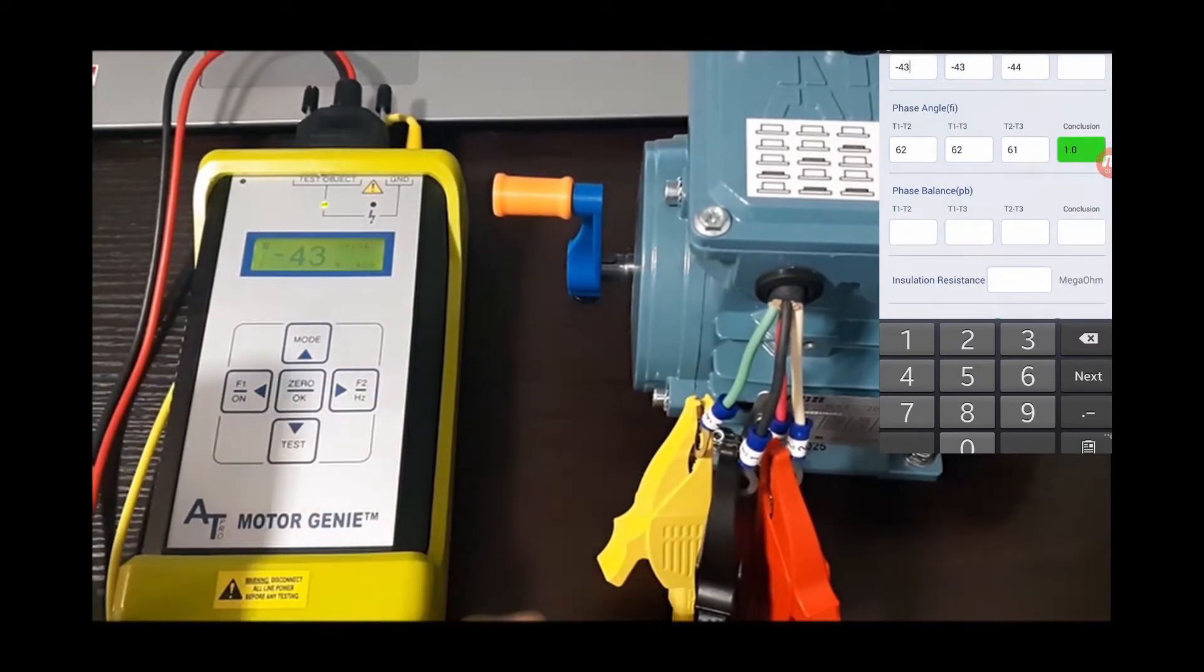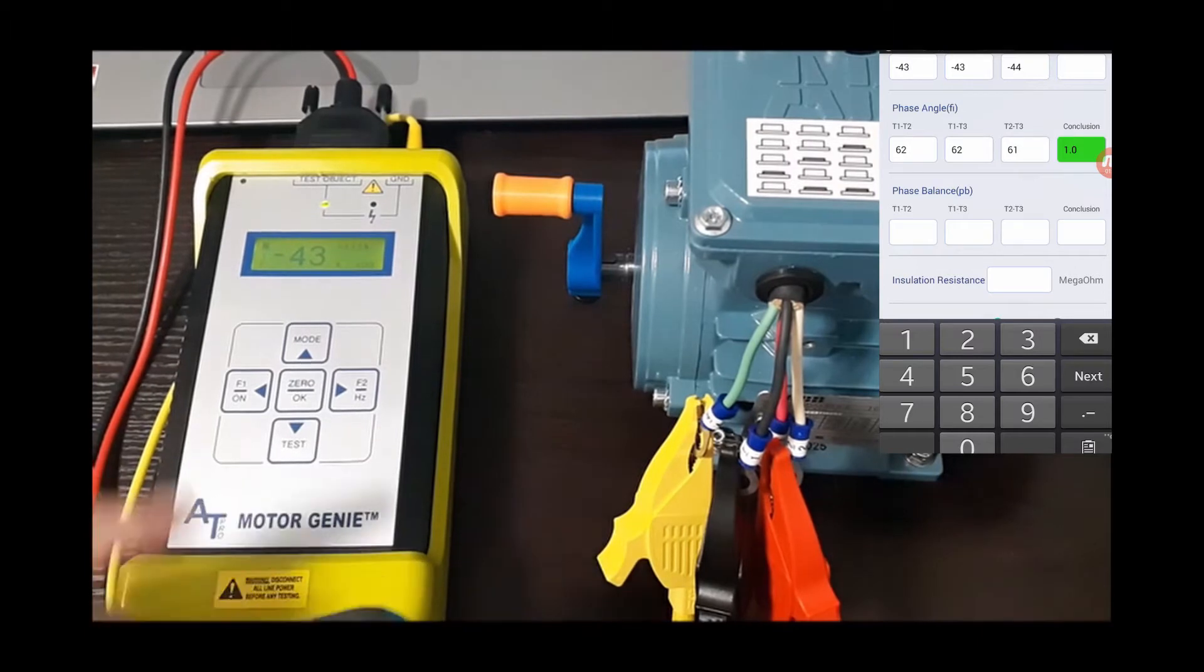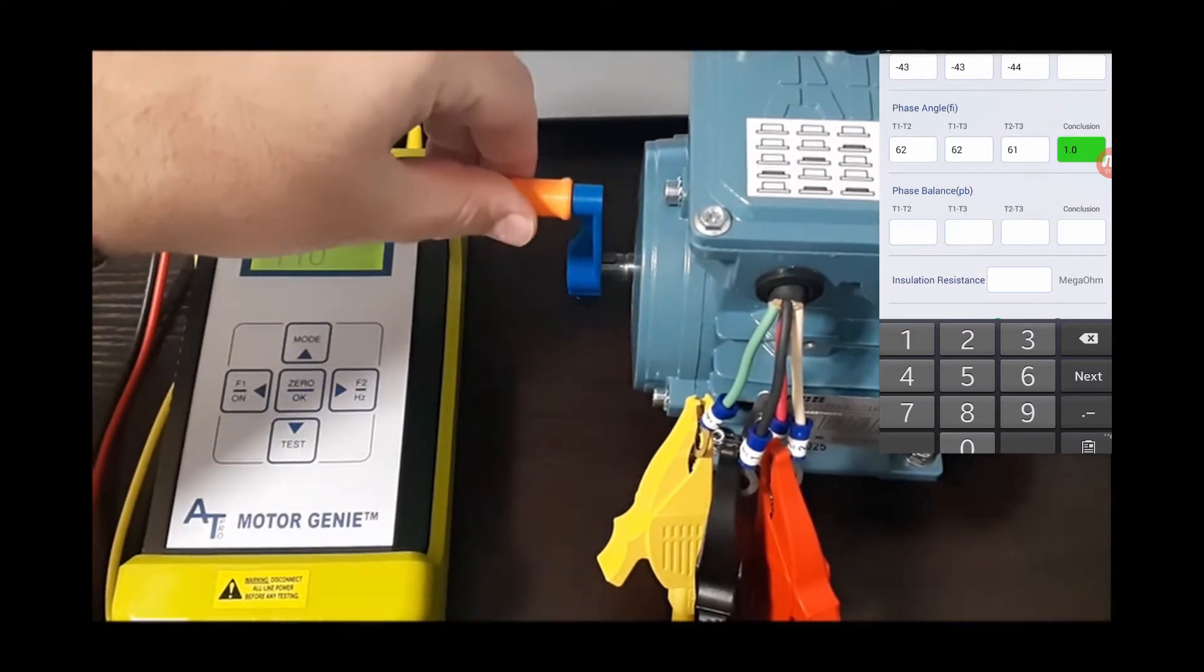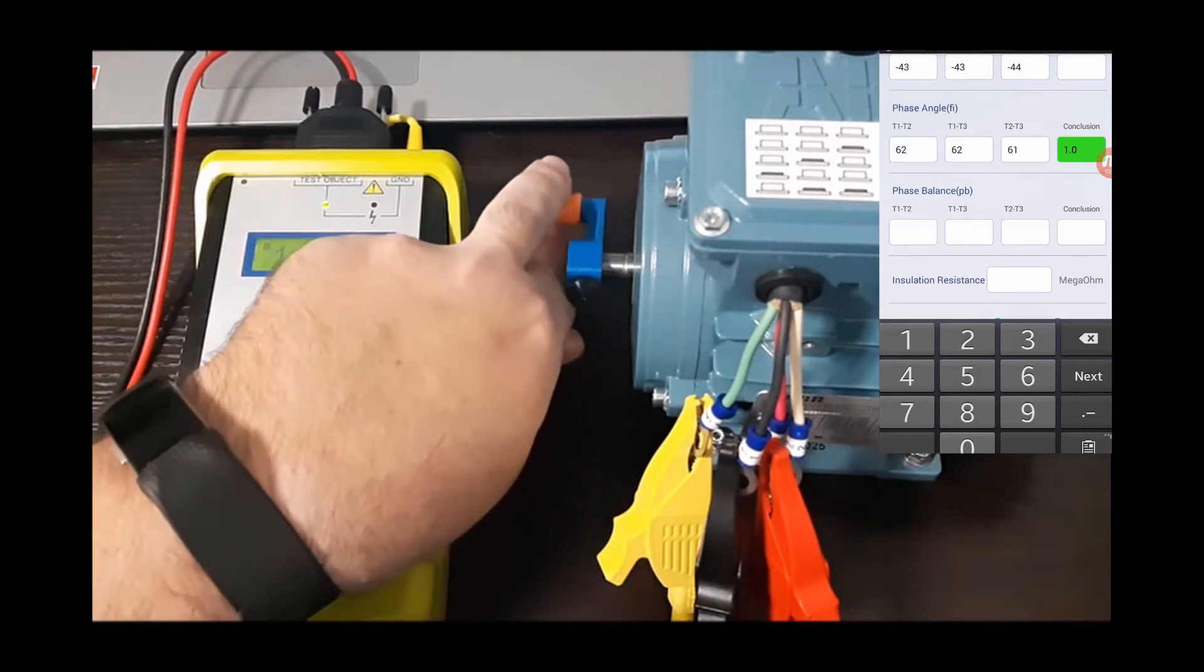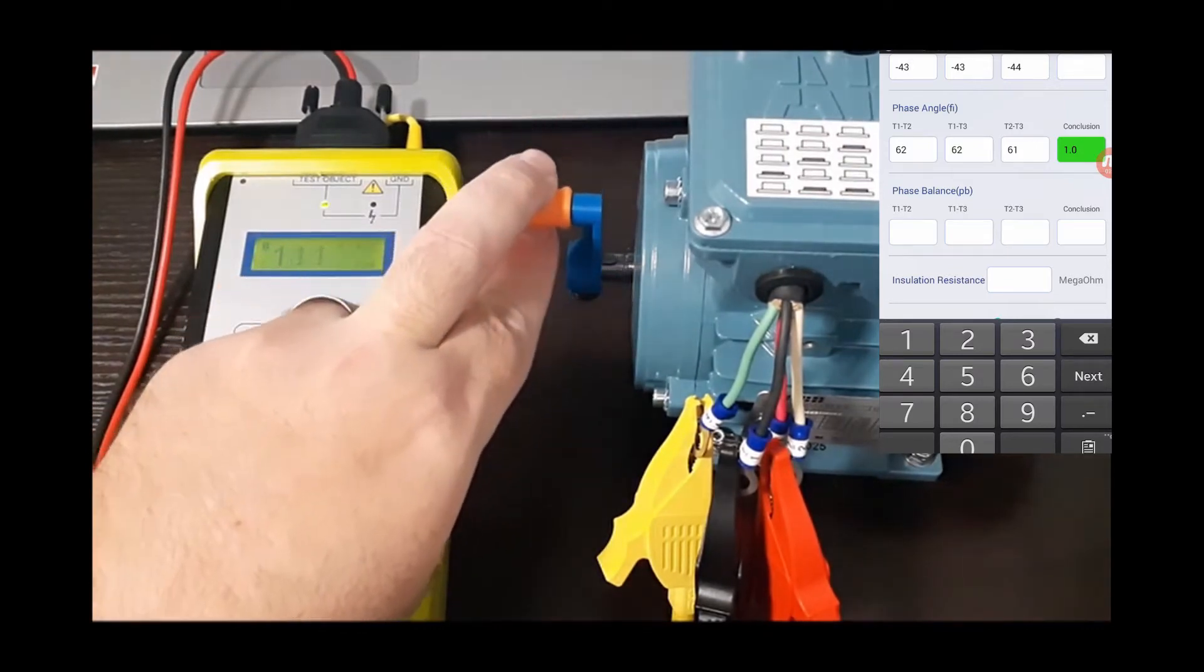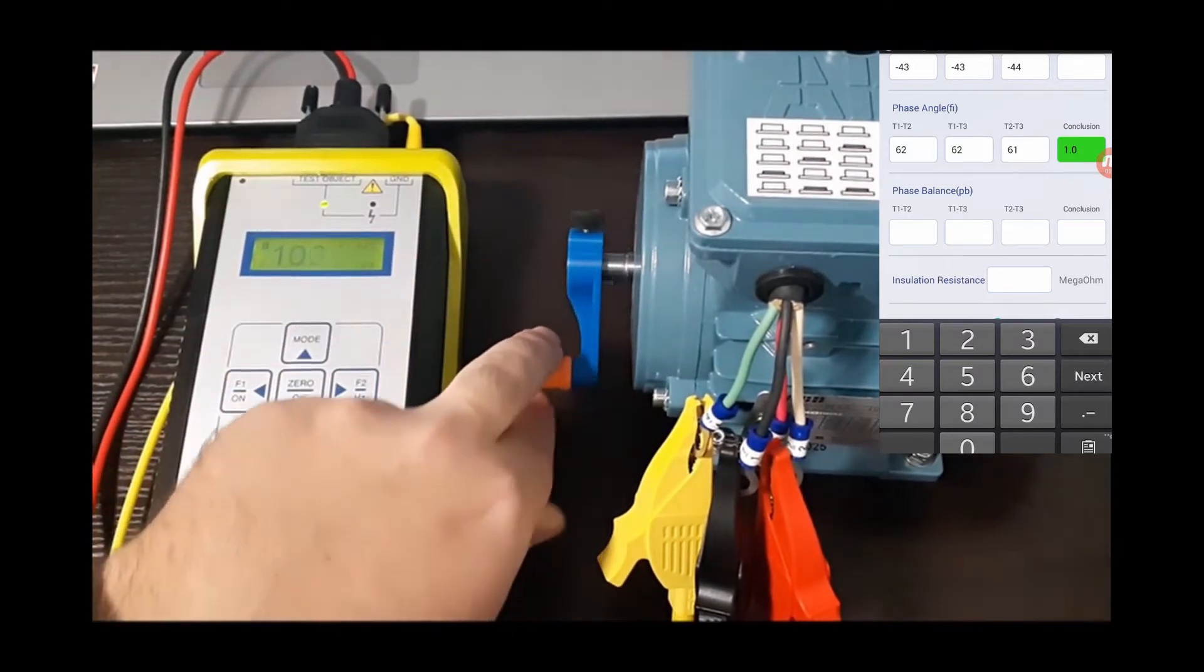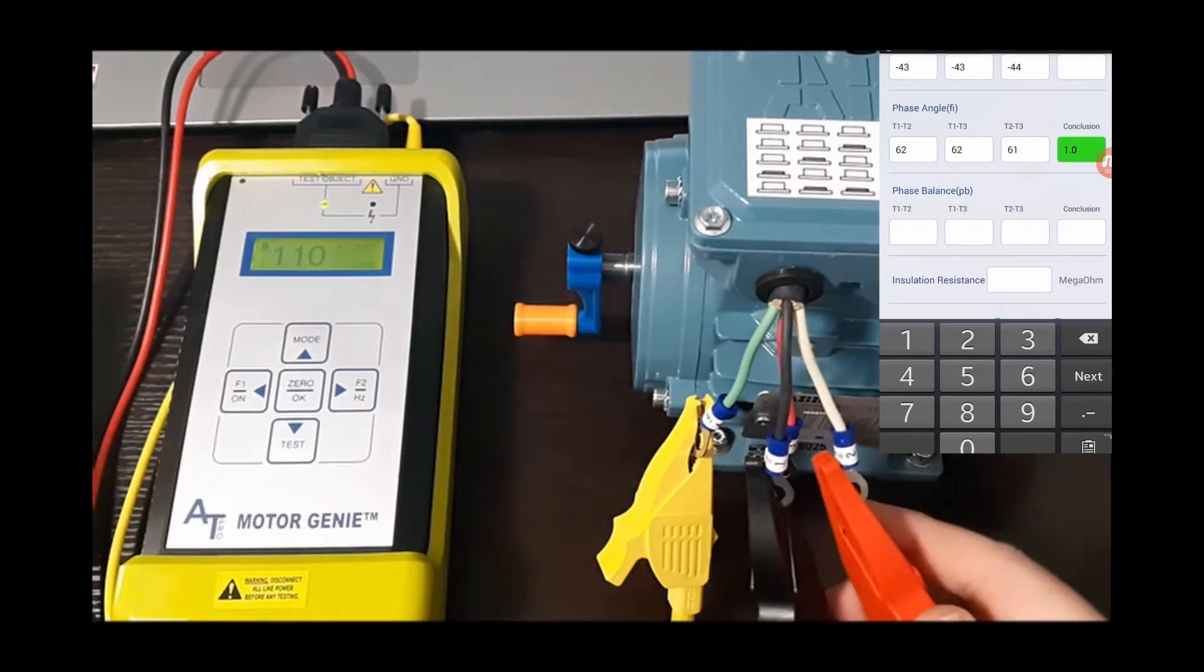We can do our phase balance. We'll head back up to the screen one here. I'm going to look for the highest number. I rotate this. Looks like I've got 111. I'll switch to 1-3.